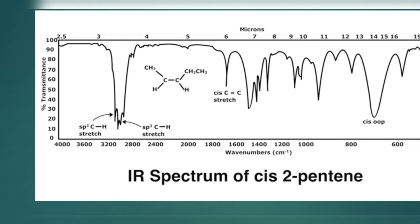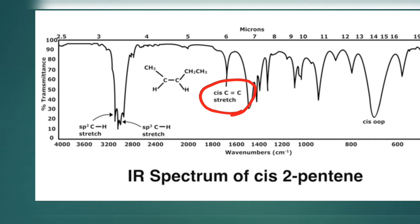The double bond is present between these two carbons. This peak here indicates that the C=C stretch is a cis stretch, meaning our given compound is a cis isomer.